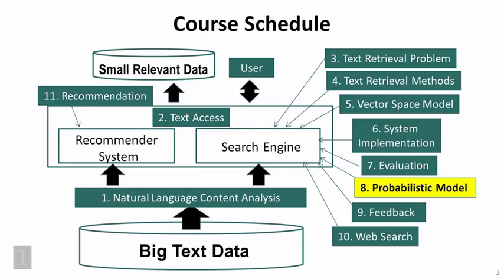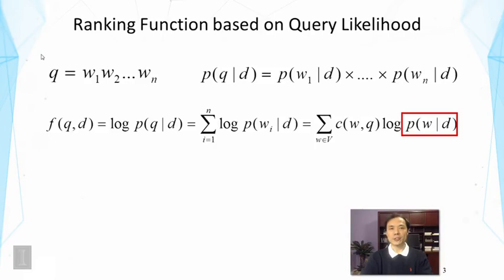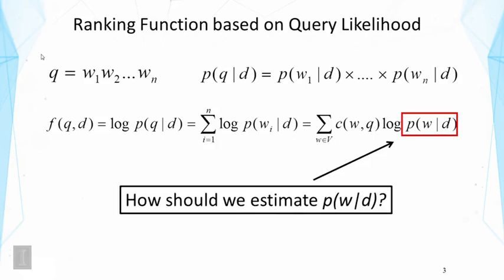You have seen this slide from a previous lecture. This is the ranking function based on the query likelihood. Here we assume the independence of generating each query word, and the formula looks like a sum over all the query words, where inside the sum there is a log of the probability of a word given the document language model. The main task now is to estimate this document language model, and different methods for estimating it lead to different retrieval functions.